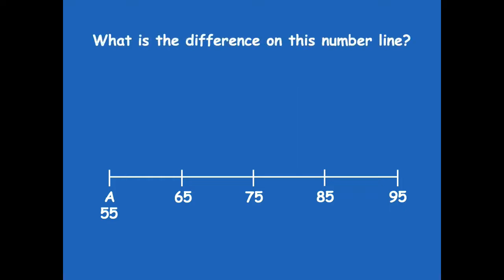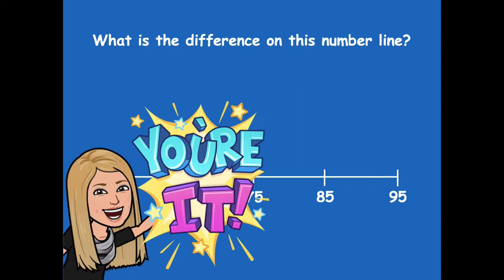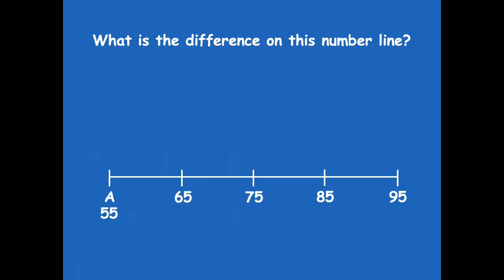What's the difference on this number line? Let's find the difference between our two endpoints. The difference is 40, because we take 95 and subtract 55, and that gives us 40.